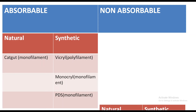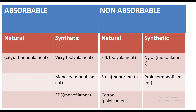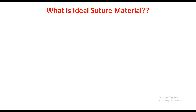Non-absorbable natural sutures are silk, which is polyfilament; steel, which may be mono or multifilament; and cotton, which is polyfilament. Non-absorbable synthetic sutures are nylon, which is monofilament, and Prolene, which is also monofilament.